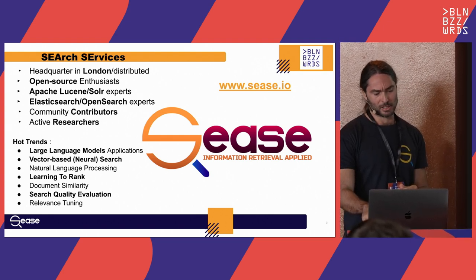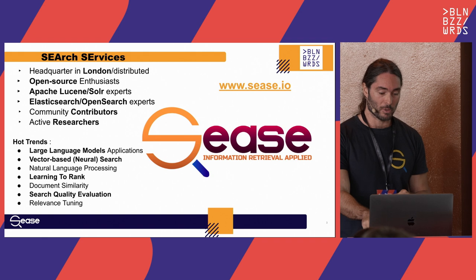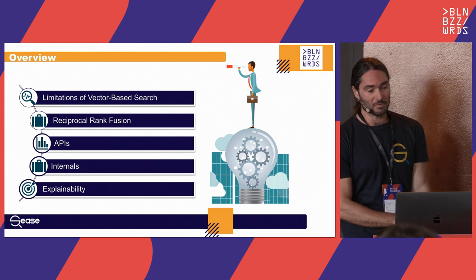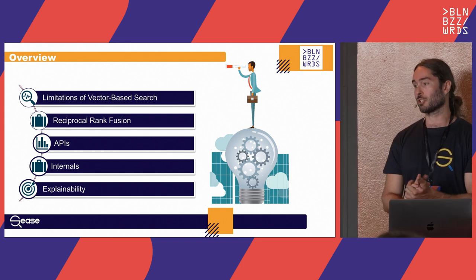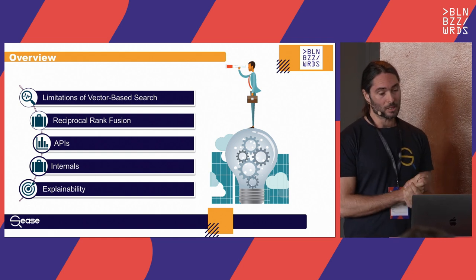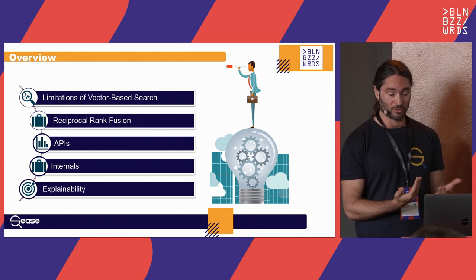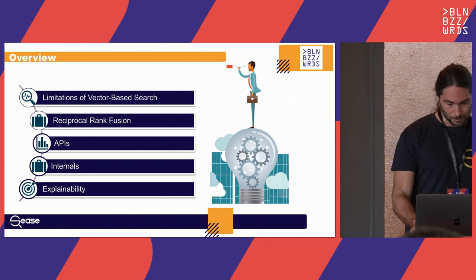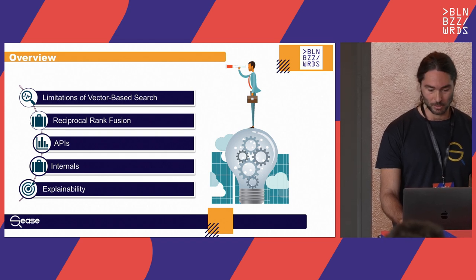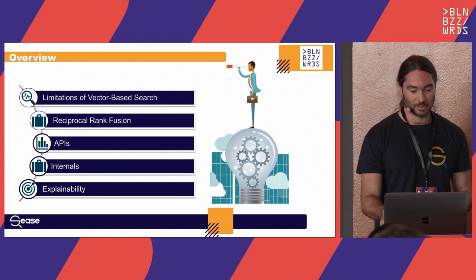We also work on relevance tuning and quality evaluation — we contributed an open source framework for search quality evaluation. Today we are going to cover: the limitations of vector-based search, reciprocal rank fusion as an approach for hybrid search, the proposed implementation in Solr, the internals of what's in the pull request, and explainability — how to explain hybrid search results.